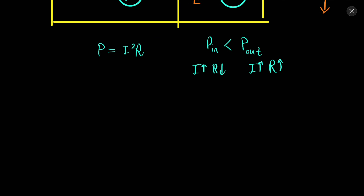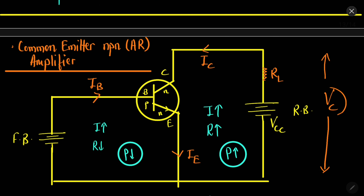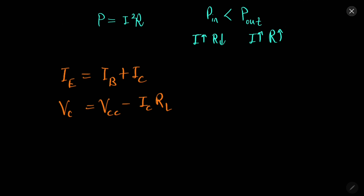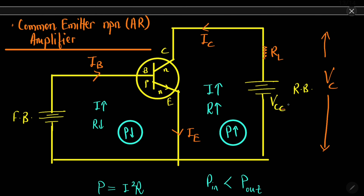From the diagram we can write: IE = IB + IC. Also, VC = VCC − IC × RL. VC can also be written as VCE, the voltage between the emitter and the collector.